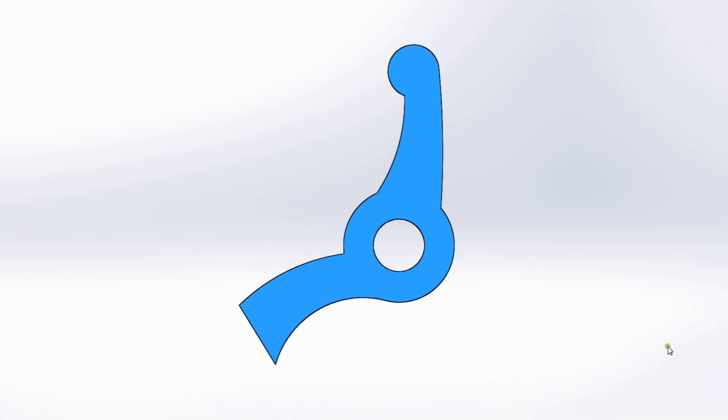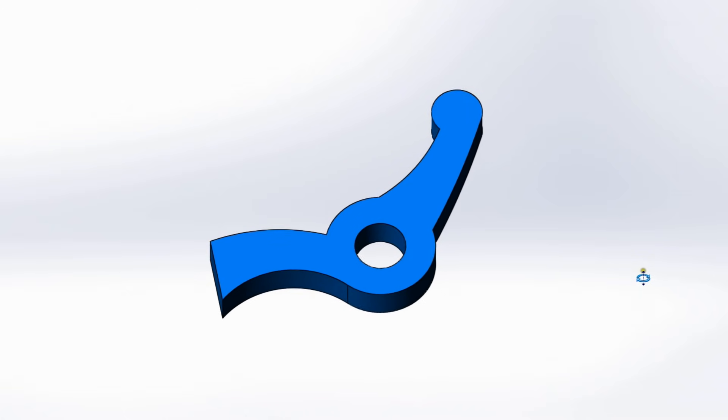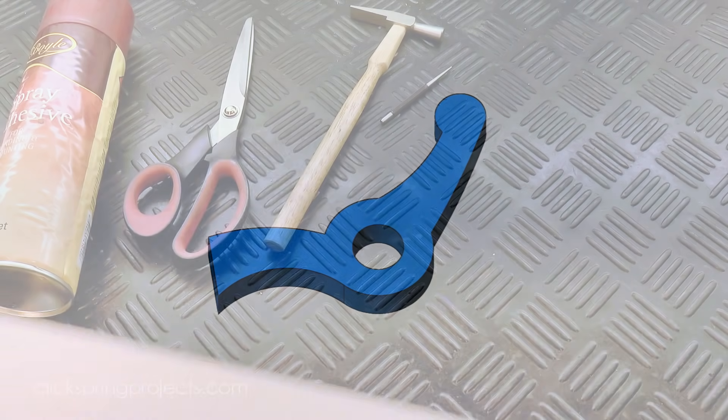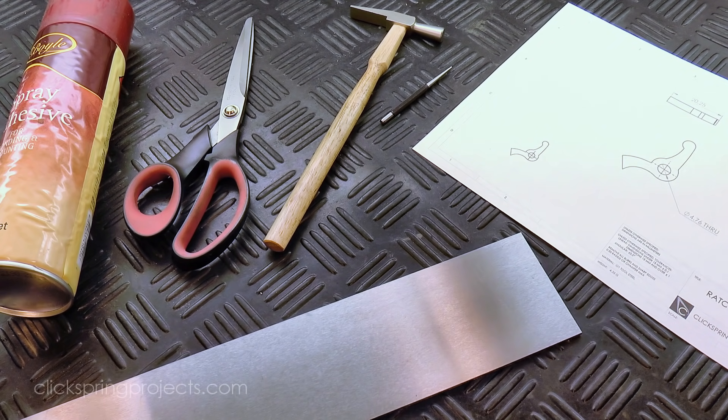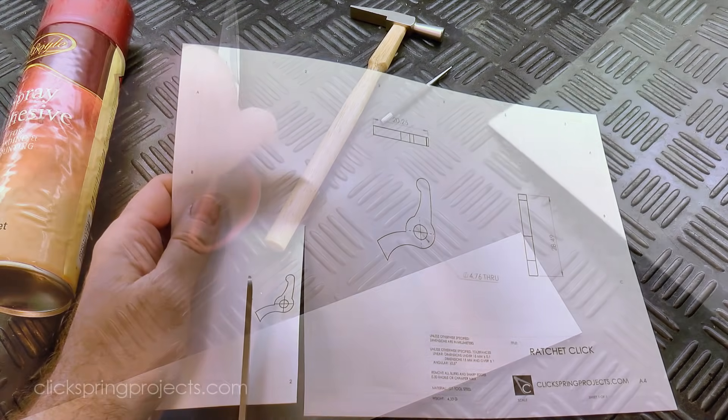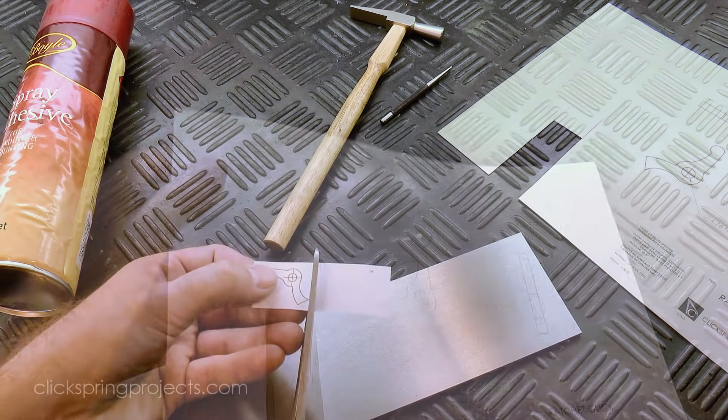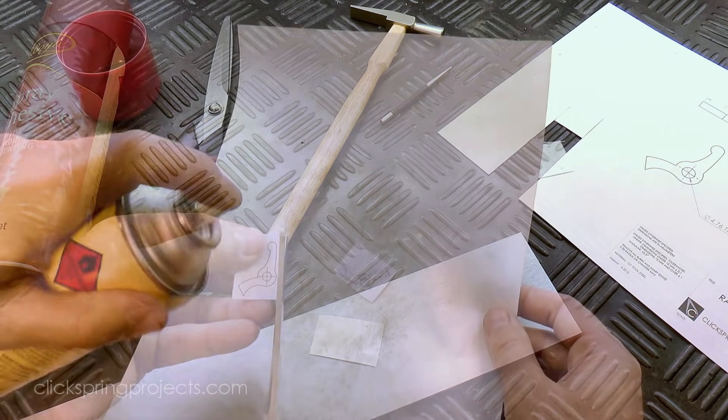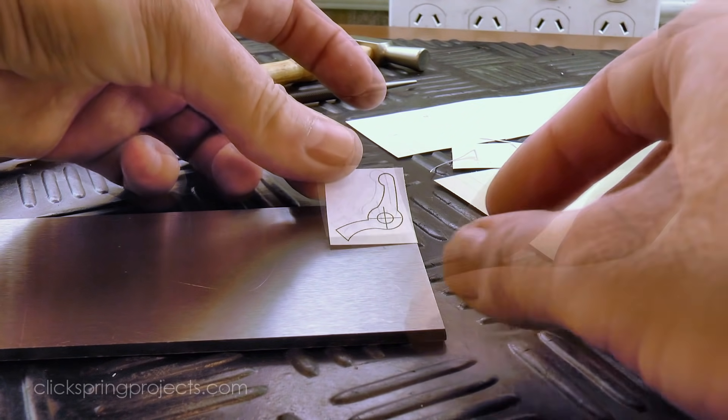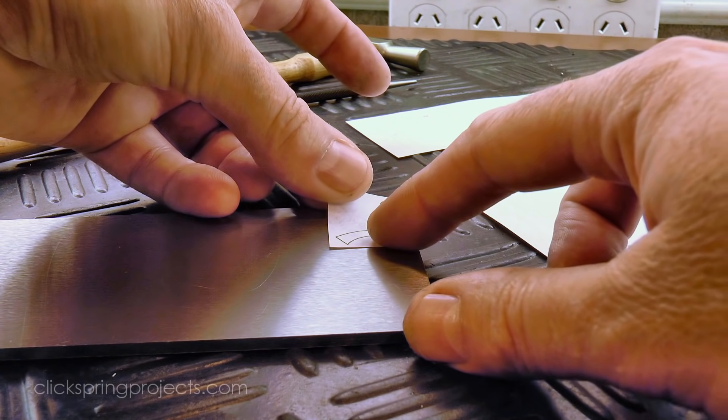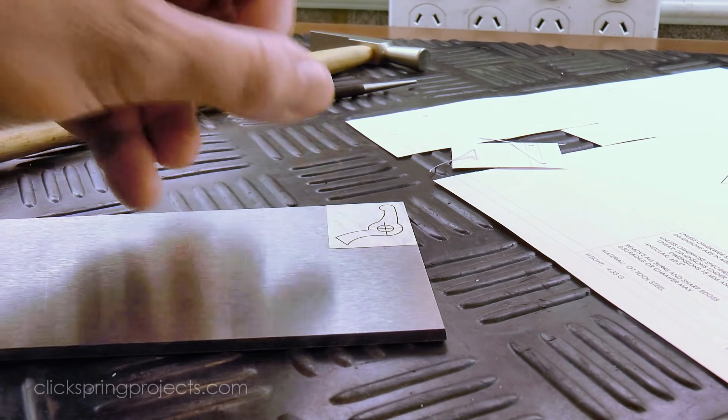Ok, so with the ratchet in position, it's time to move onto the click, which has this beautiful curved shape that I'll be forming from precision ground tool steel. A simple paper template is a great way to mark out the part on the raw stock, and while it was still attached, I marked out and then drilled the centre hole.